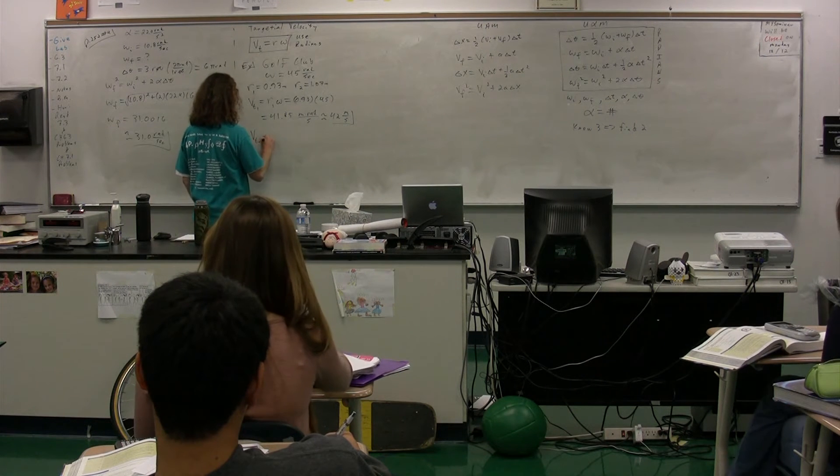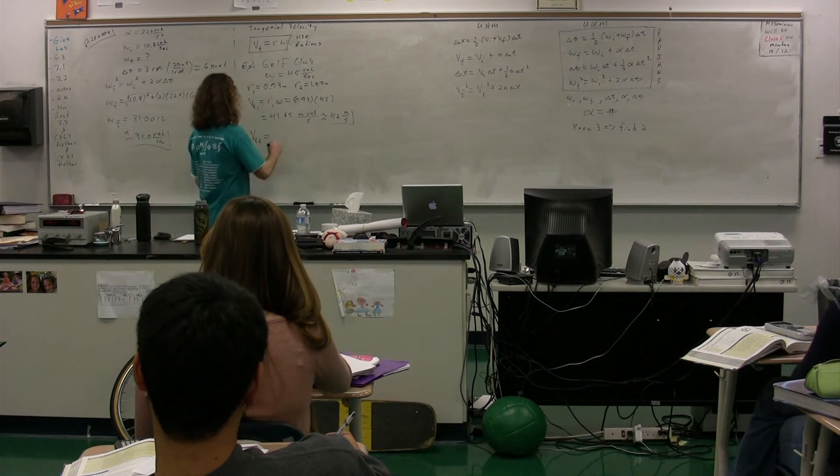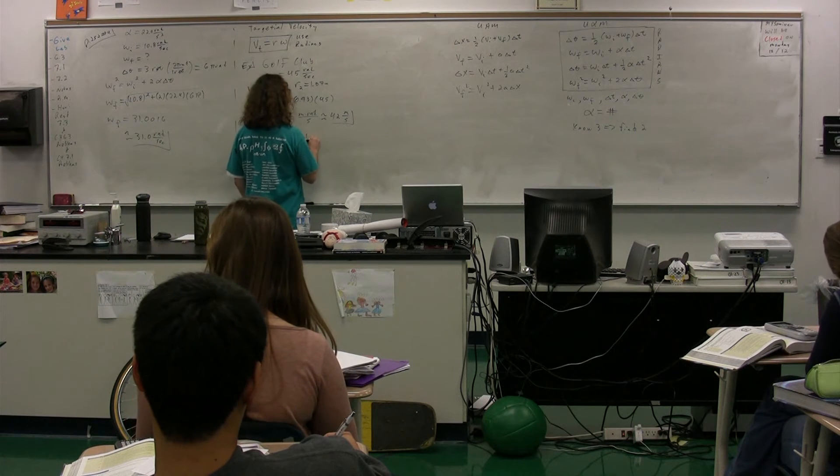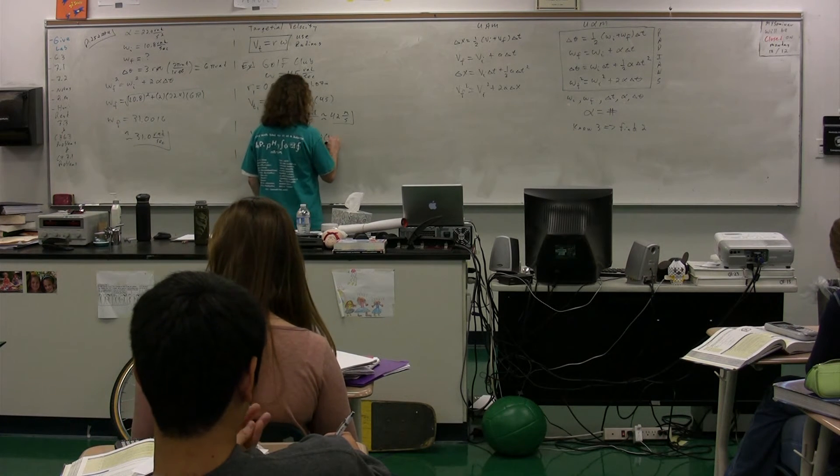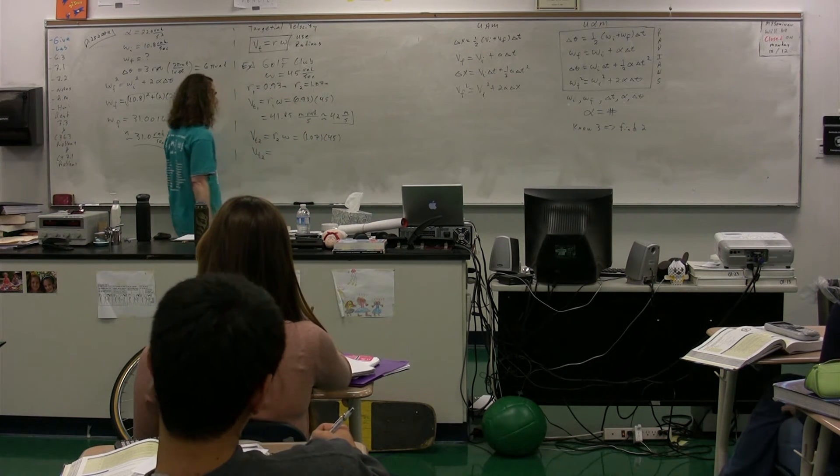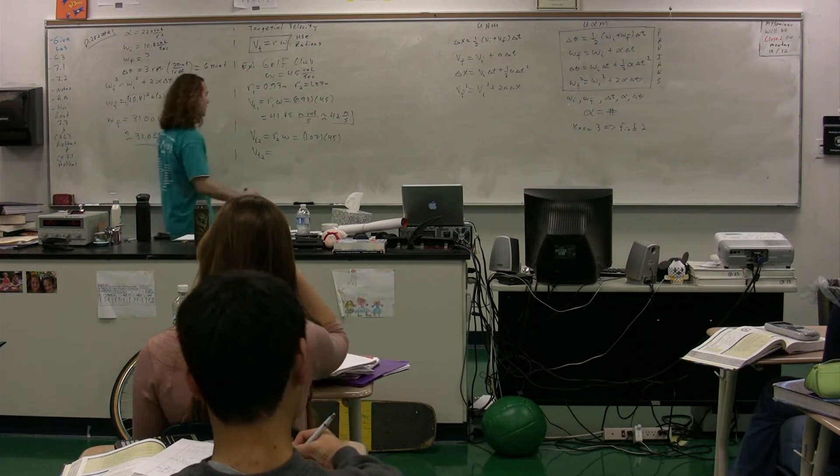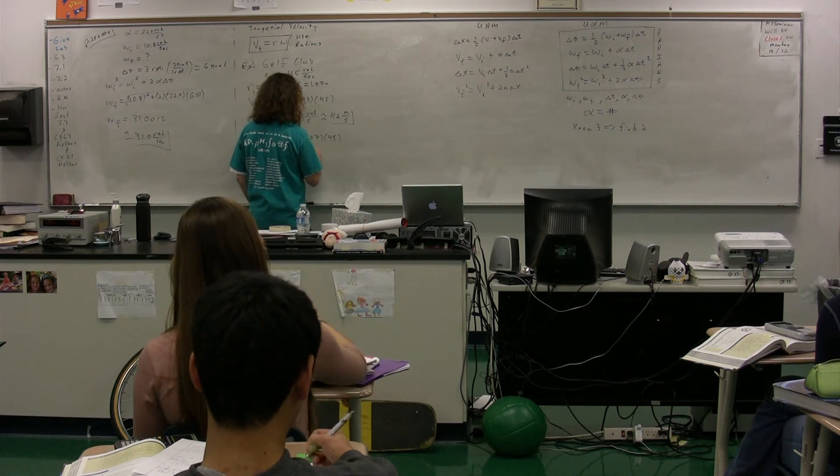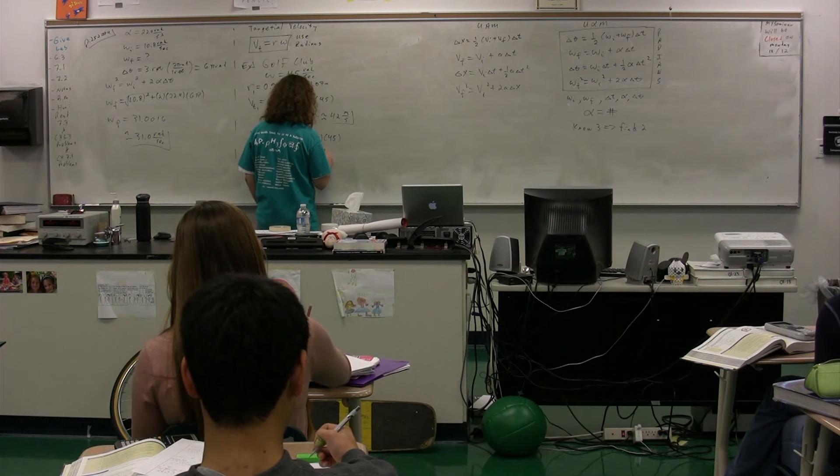We can figure out the tangential velocity for the second one, which is going to be the radius for the second one times the angular velocity, or 1.07 multiplied by 45. The tangential velocity for the second one... 48.15, or with sig figs, 48 meters per second.